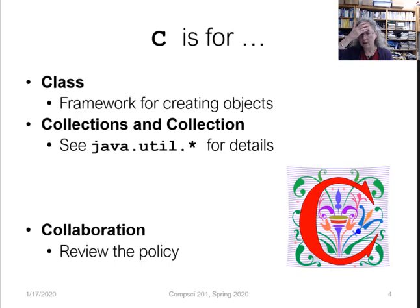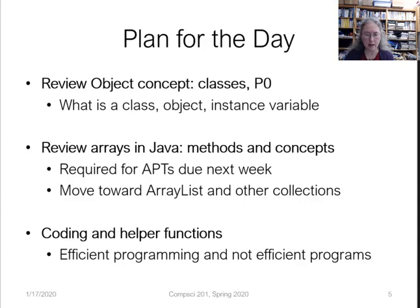There are two different packages in Java. A package in Java is a set of classes that are related. Also, today for C-Day we have collaboration, so please review the collaboration policies on the web page. Today we're reviewing objects, looking at the P0 assignment — what's a class, what's an object, what's an instance variable. We're also going to start reviewing arrays in Java and methods you can call. Eventually we'll move towards ArrayList, because an array in Java is a fixed object — it's not an object that can expand. An ArrayList is an object that can expand.